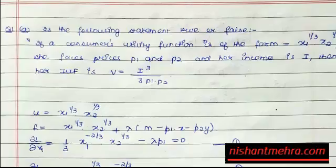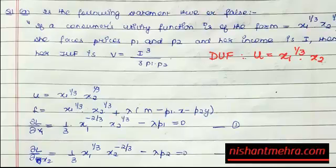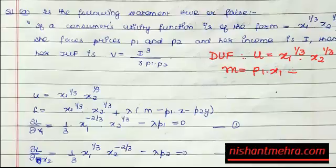So you have a direct utility function given as u = x1^(1/3) * x2^(1/3). I may use m in place of i, or y in place of x2 — just bear with me, this is very mechanical. Your budget constraint is m = p1*x1 + p2*x2.